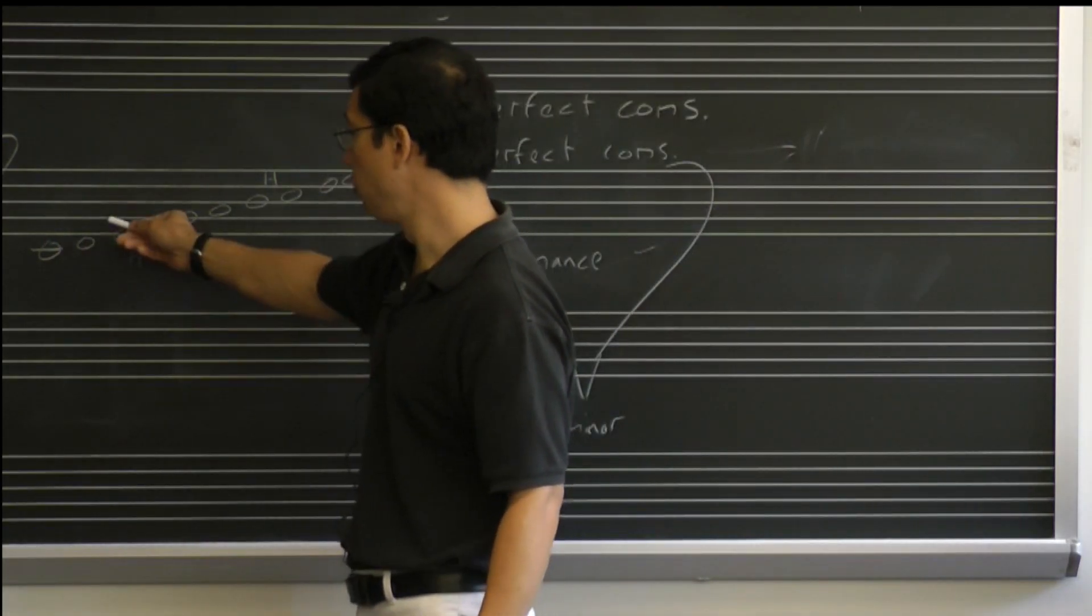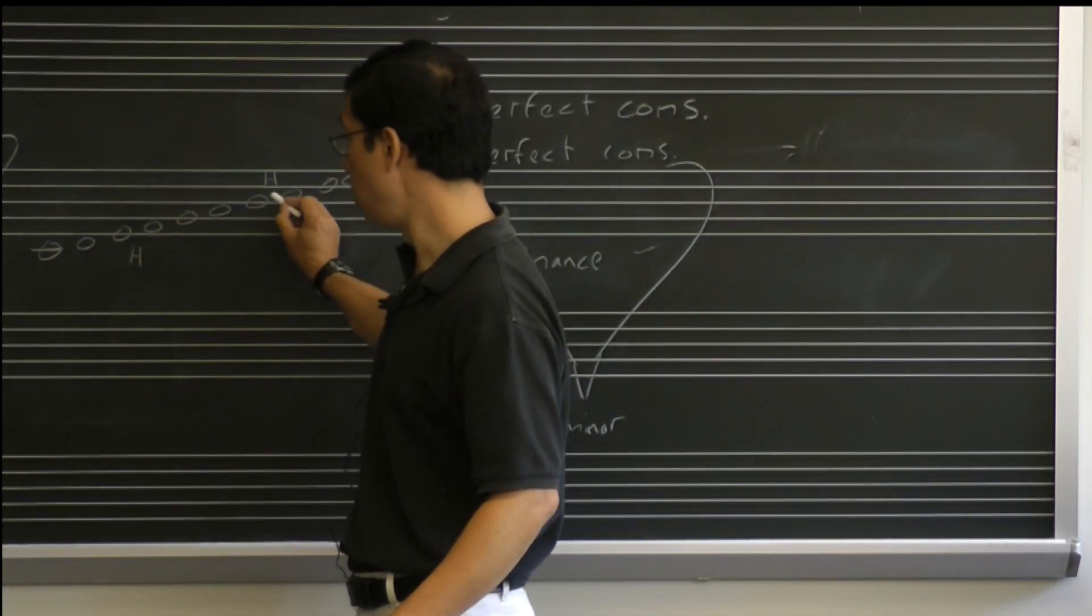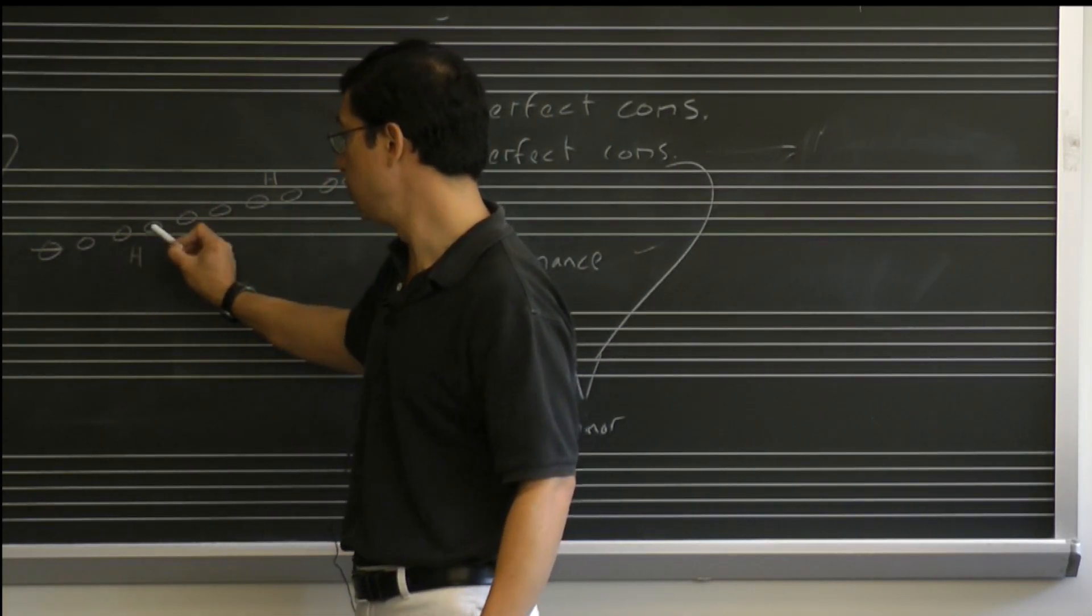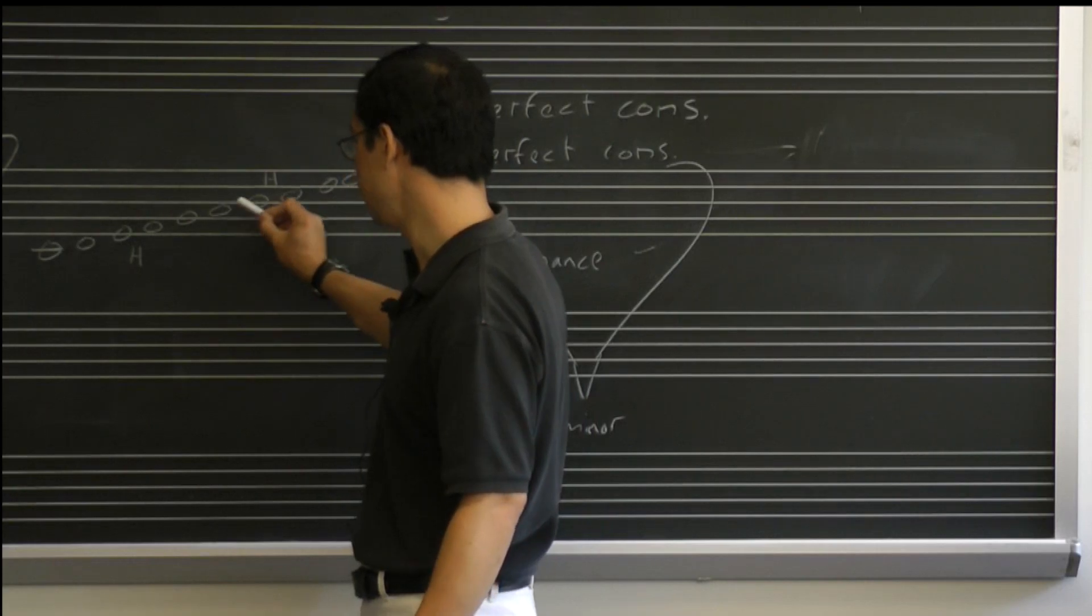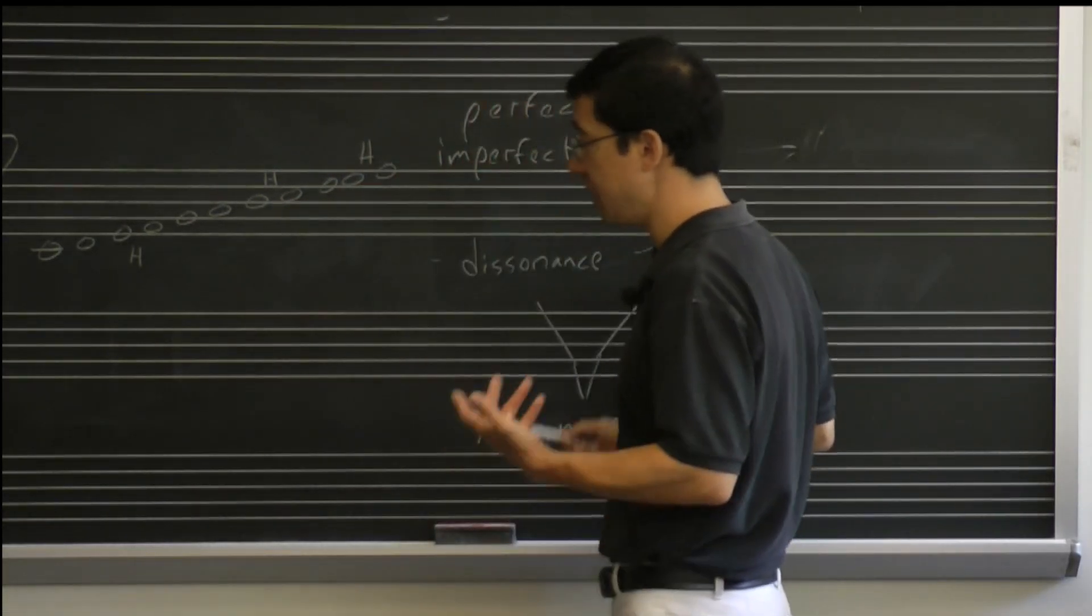So the second, as you go from one step to another, that's going to be called a second. One, two. The small one is the half step, one half step containing. The larger one, one, two, most of the seconds are major seconds. They're whole steps. They contain two half steps.